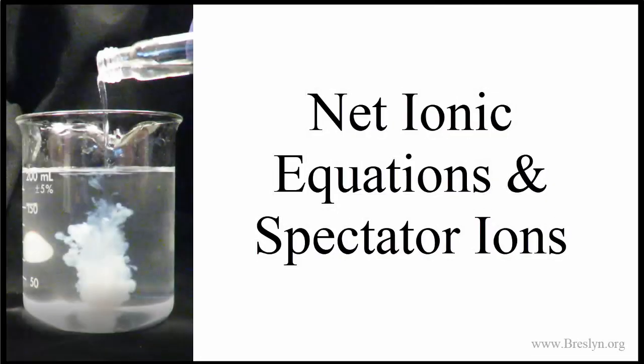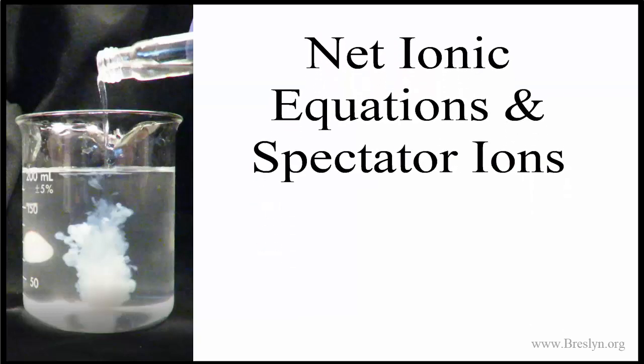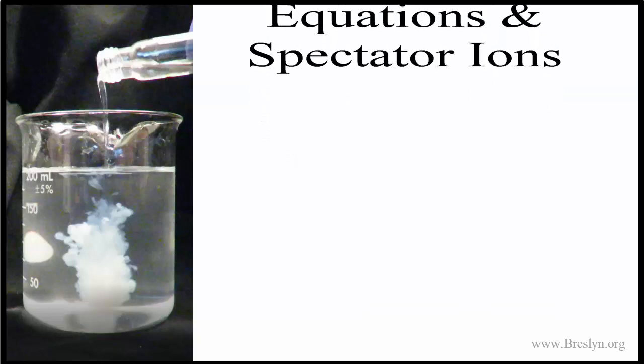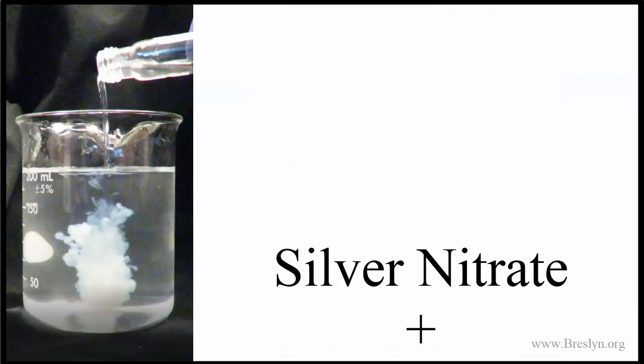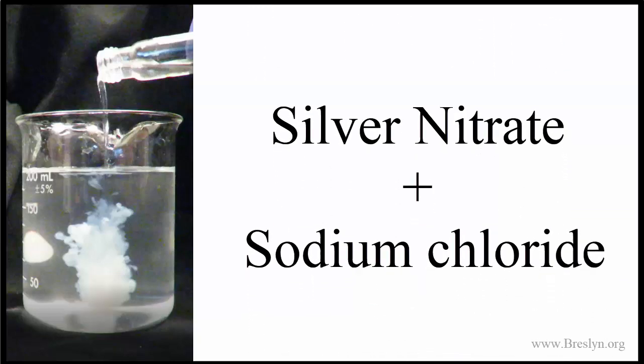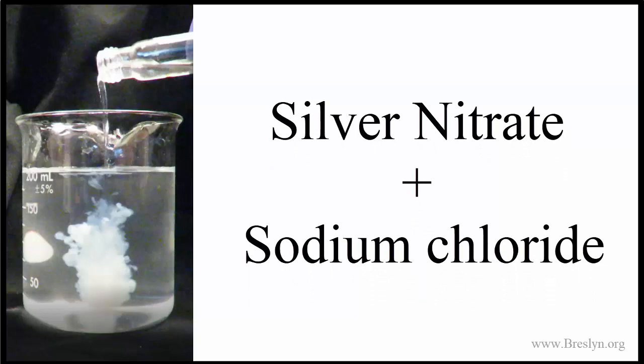In this video we're going to look at net ionic equations and specifically spectator ions. By the end of the video you'll understand how to do net ionic equations and really understand these spectator ions, their role in the equations, and what's happening chemically. We'll start with a common net ionic equation: silver nitrate and sodium chloride.